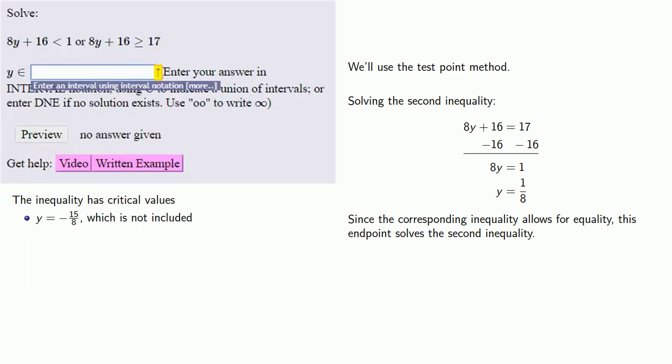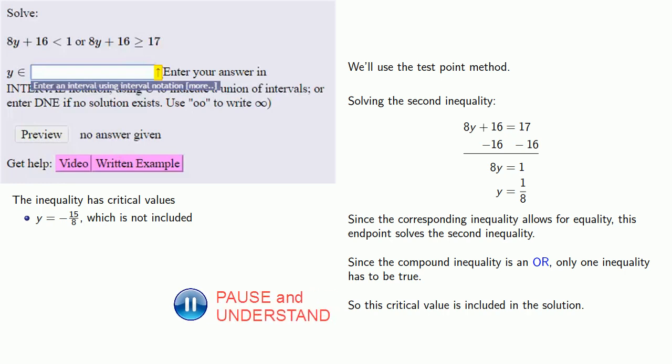Remember, this is a compound inequality. Fortunately, since the compound inequality is an OR, only one inequality has to be true. Since we've solved the second inequality with y equals 1/8, this critical value is included in the solution. So our critical value y equals 1/8 is included.